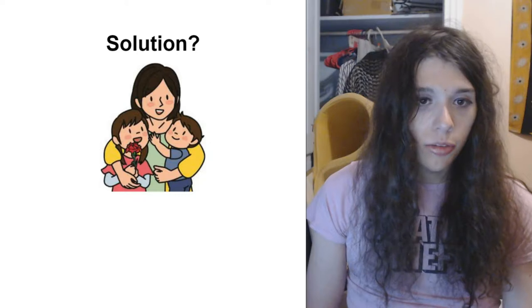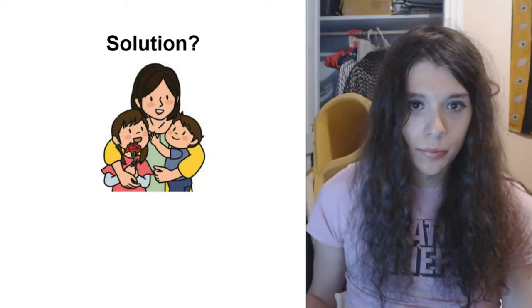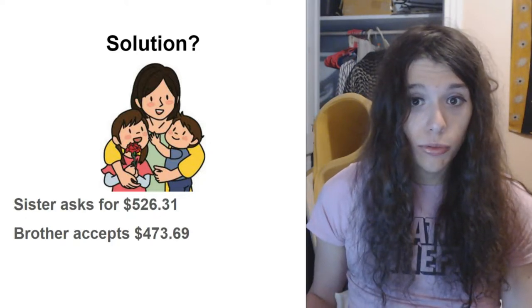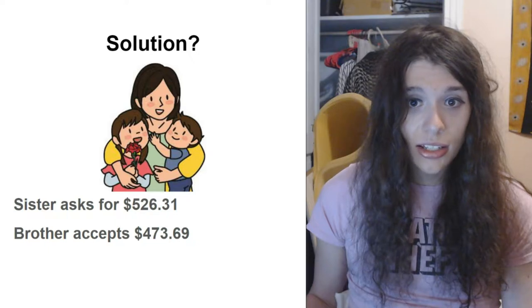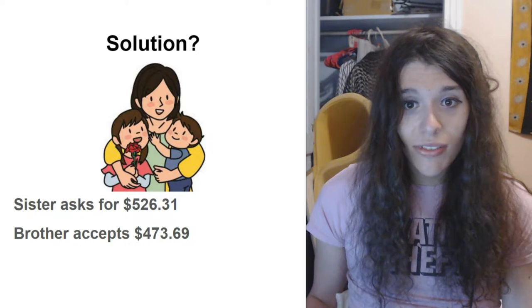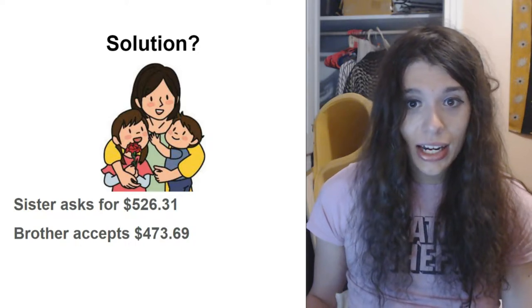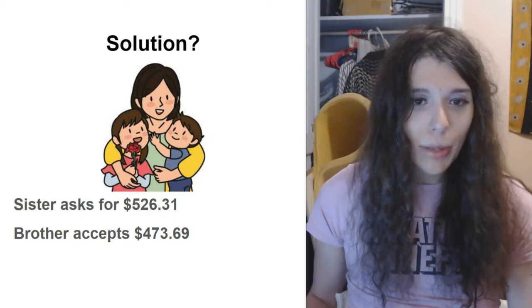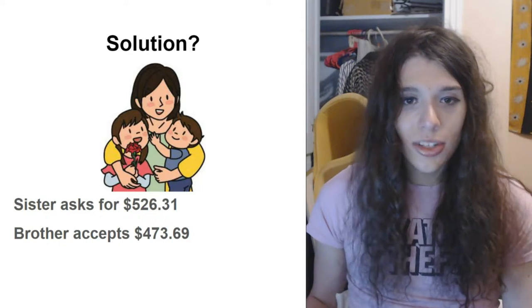So what is the rational solution? Sister asks for $526.31 and brother accepts the remaining $473.69. This may be confusing. How do we get those numbers?